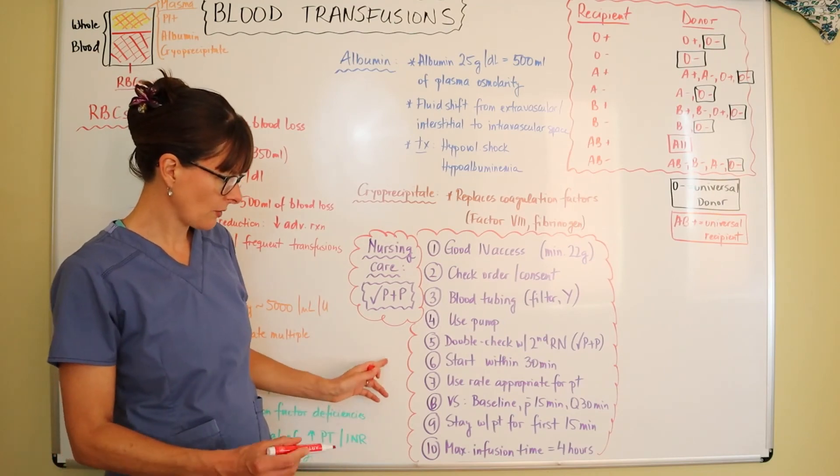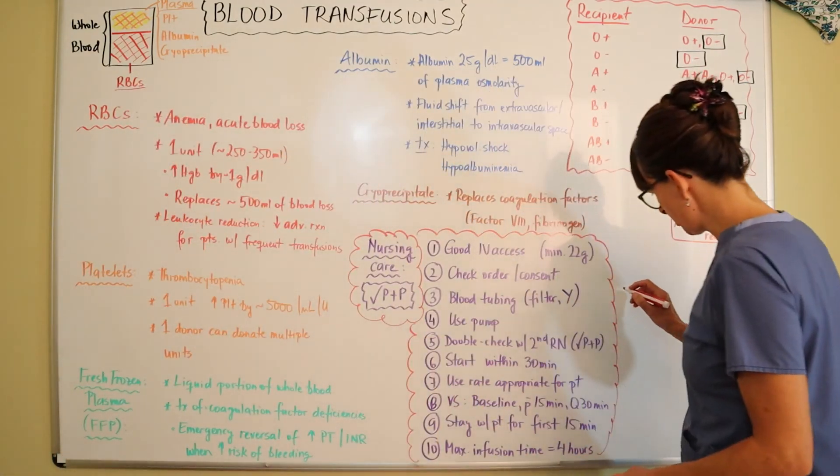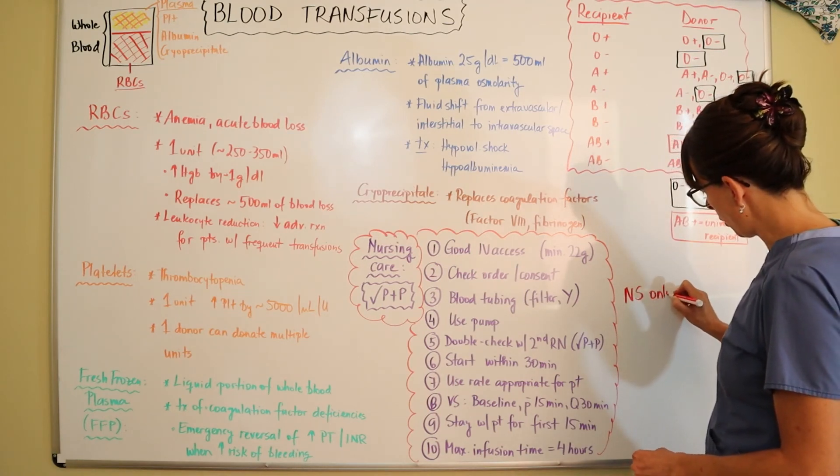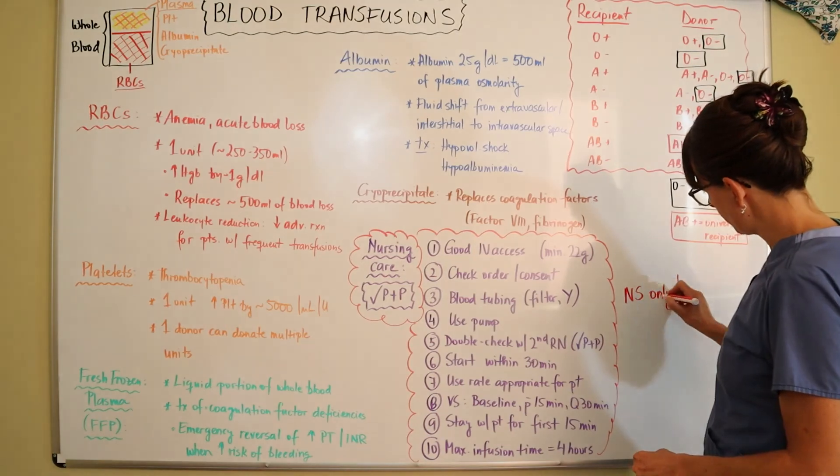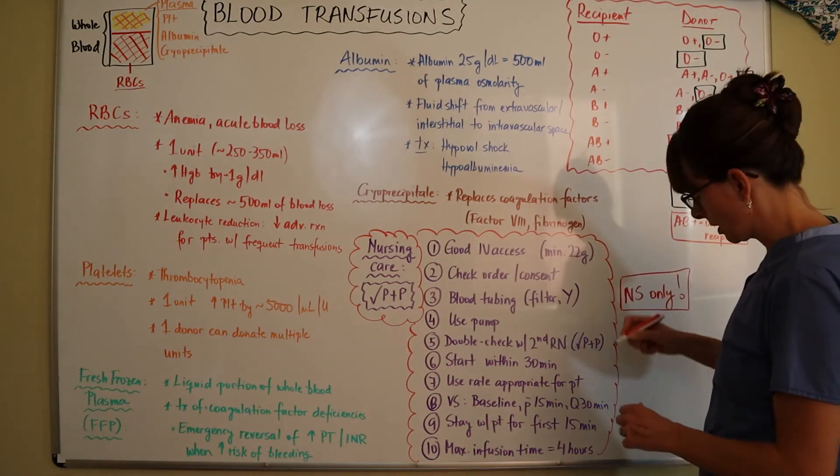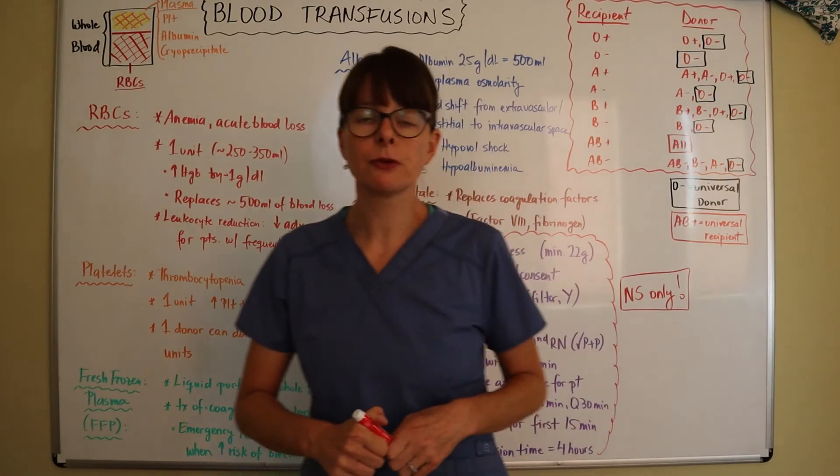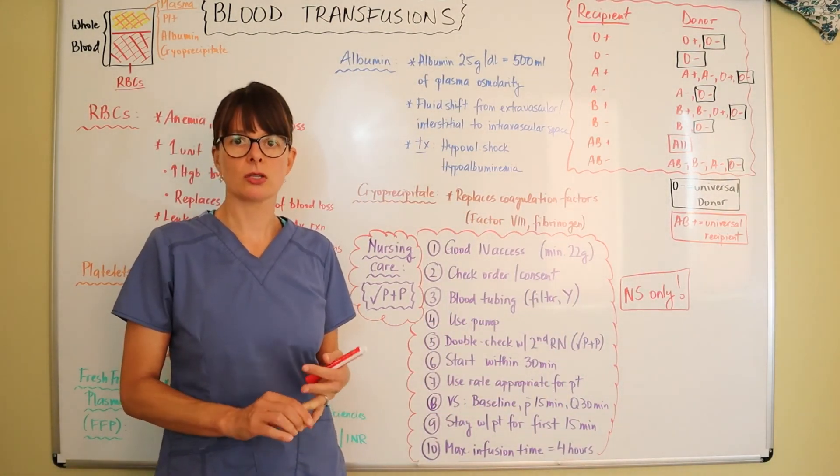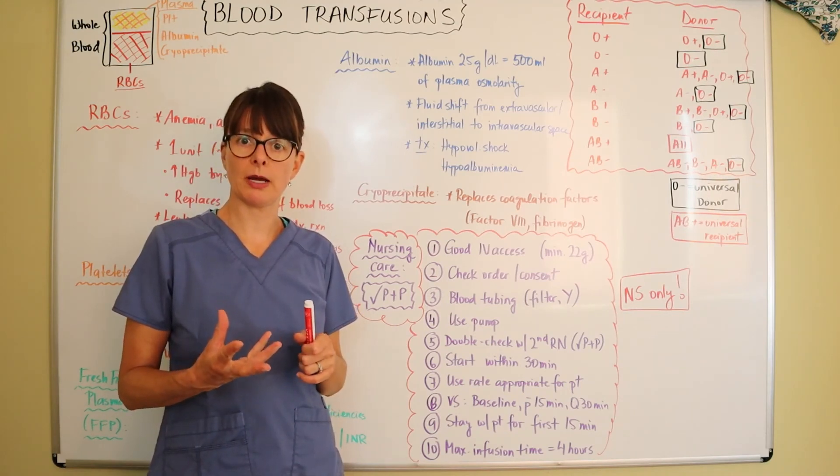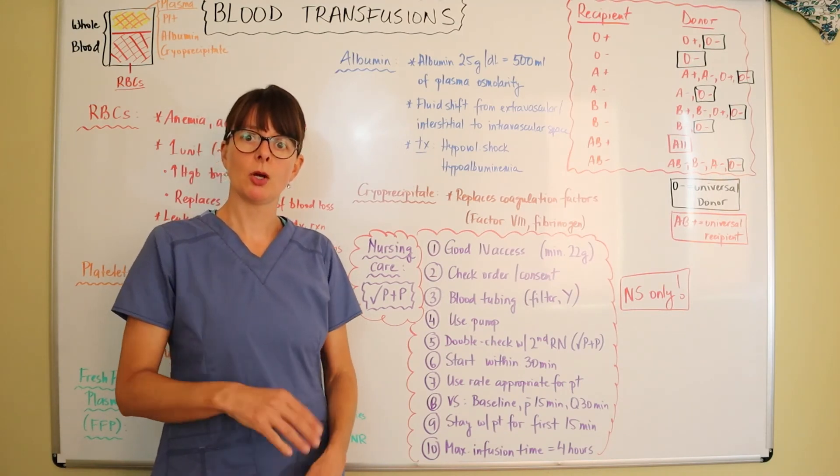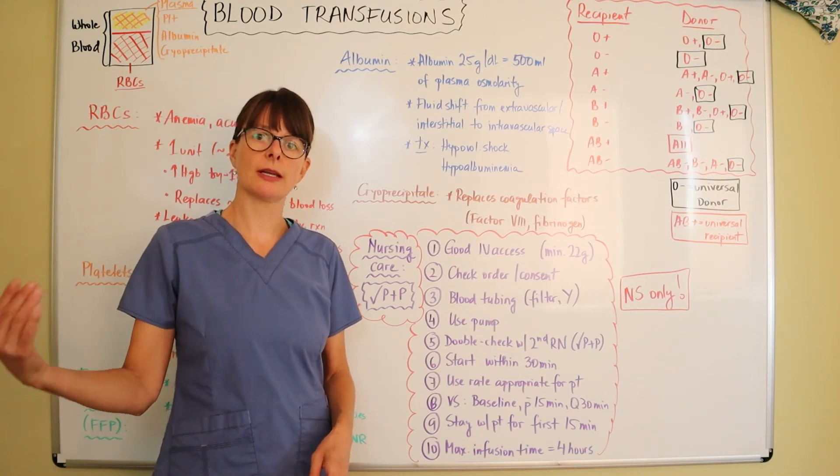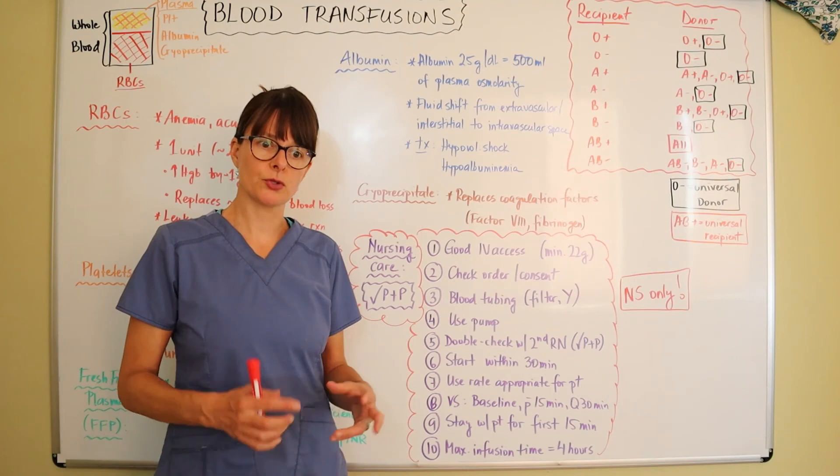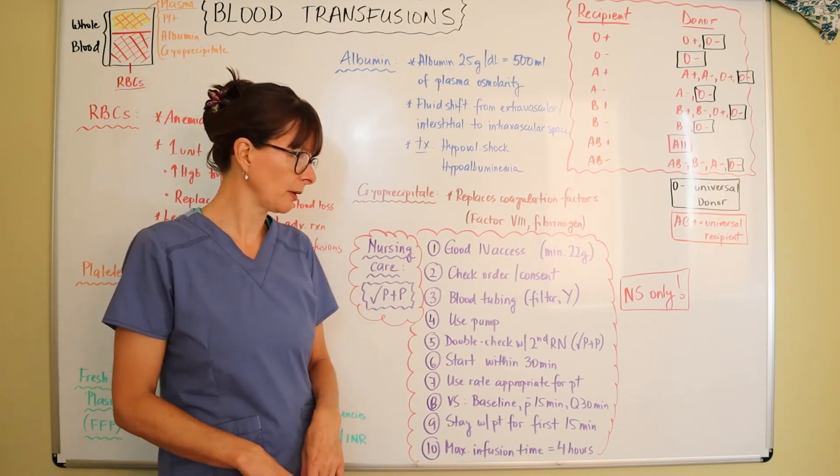One of the most important things, we want to administer with normal saline only. The reason is that any kind of other fluids such as D5 or LR can cause some precipitation with the blood and then we have a huge problem. We can't use the blood, patient care is delayed, or if it reaches the patient they're getting an infusion of some precipitated or coagulated blood.